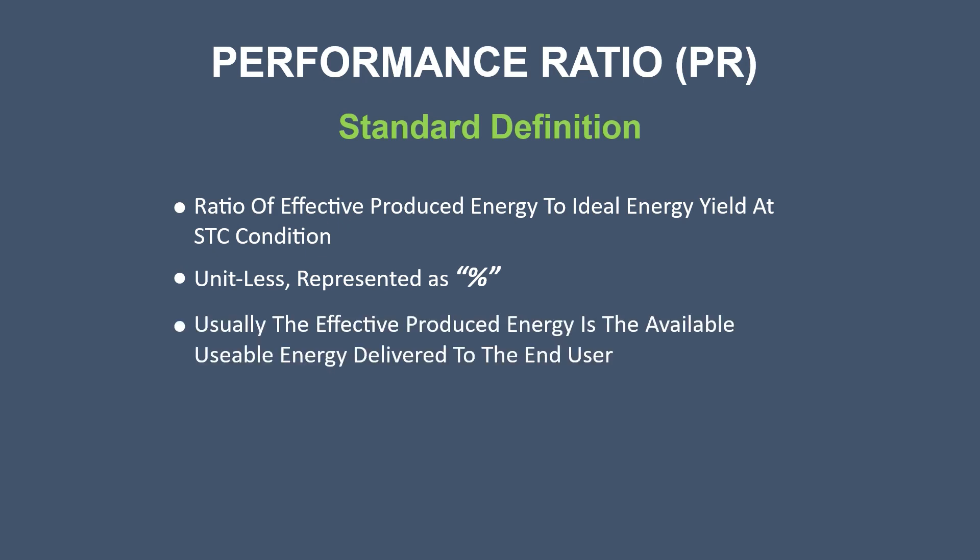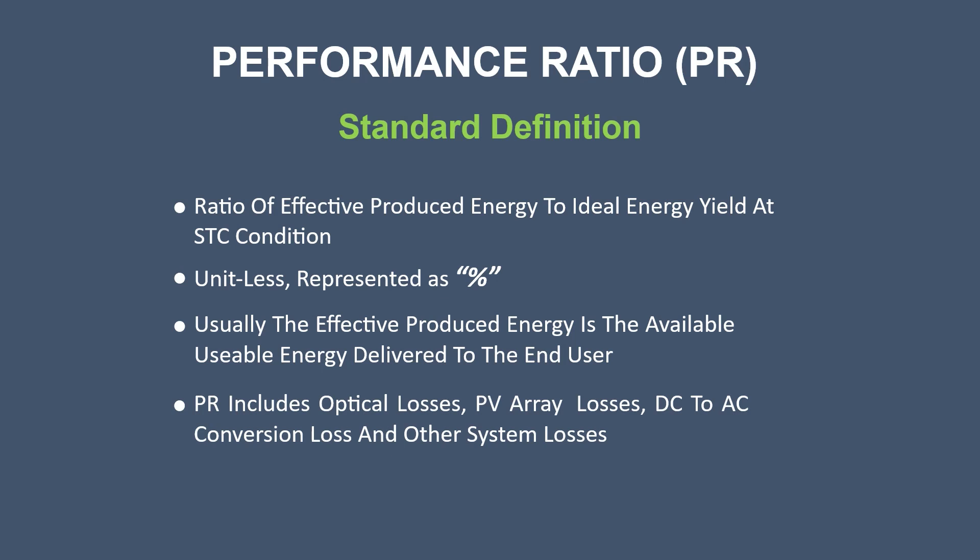The term effective energy is the available usable energy delivered to the grid or to the end user. While calculating the PR, all the losses — such as optical losses, PV array losses, DC to AC conversion losses, and other system losses — are taken into account. Please follow our other videos for detailed info on different types of system losses.